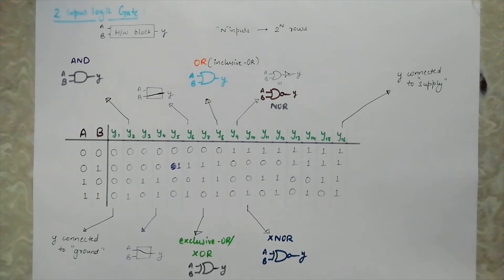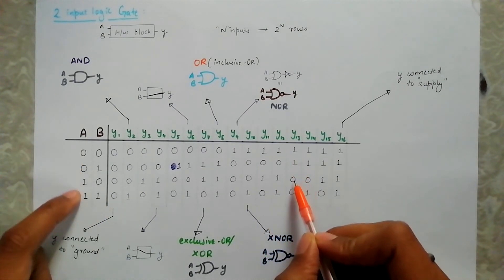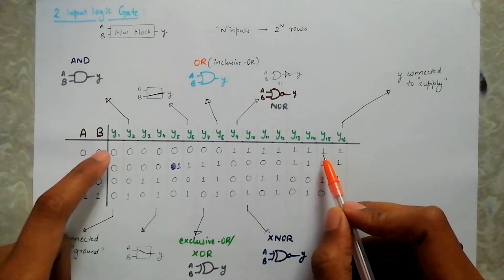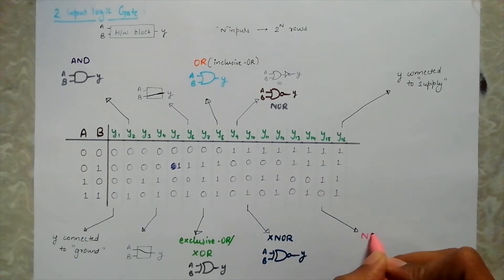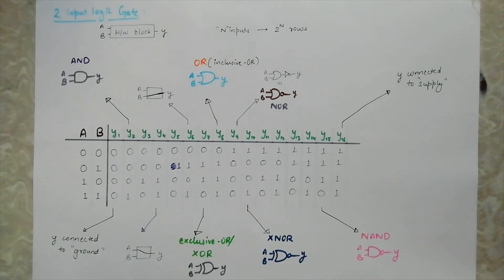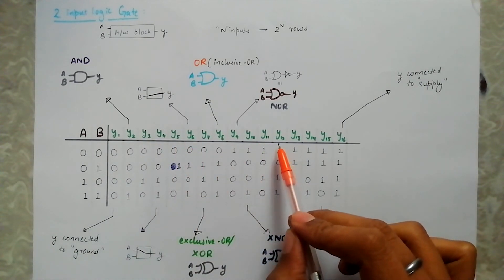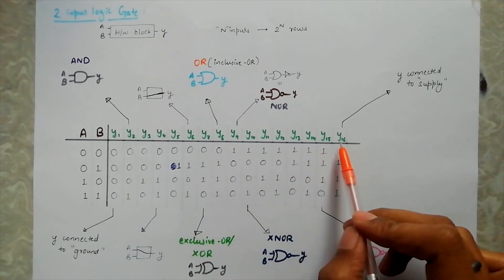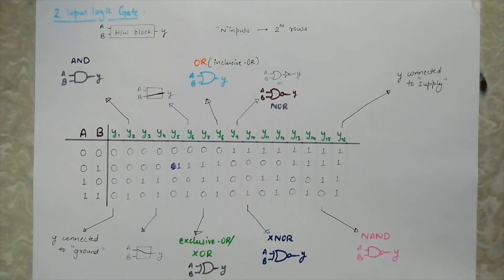For 11, Y is inverted version of input B here. 13 has inverted A as an output. 15 is inverted AND and is called a NAND gate, represented by this symbol. Now we have a few cases to which we didn't give a special meaning: 3, 5, 12 and 14. They can be generated by some sort of combination of the gates we have discussed so far.